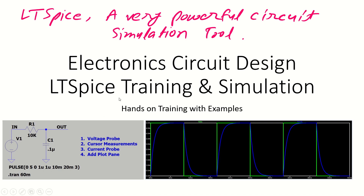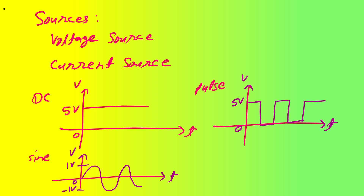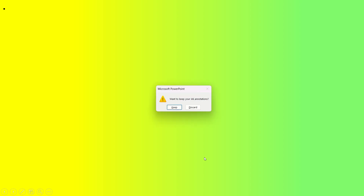Namaskar, my dear friends. Let's start the session for circuit design in LTSpice. We have already seen some basics of LTSpice like how to put components and change their values. Now we will talk about sources — there are different kinds like voltage sources and current sources. A source can be a DC voltage like 5V, 10V, or 3.3V. We also have square waves, triangular waves, pulse waveforms, and sinusoidal voltage sources. Let's get into the circuit.